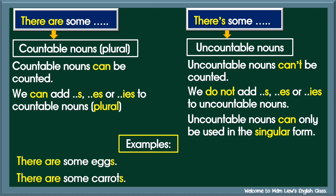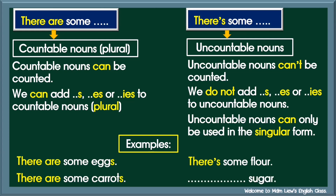Next example. Flour. You can't count flour, right? It's uncountable. So, use the phrase there's some. There's some flour. Next, sugar. You can't count sugar, right? It's uncountable. So, use there's some. There's some sugar.